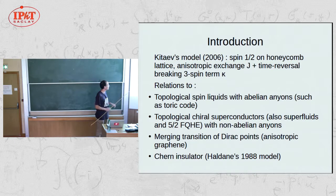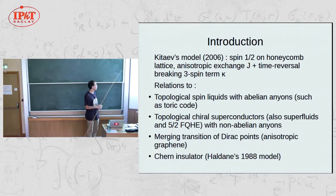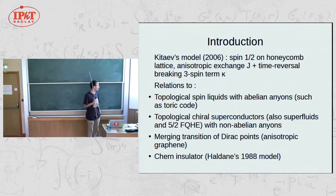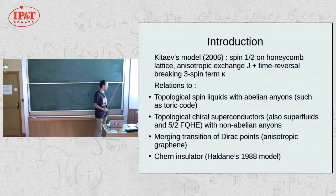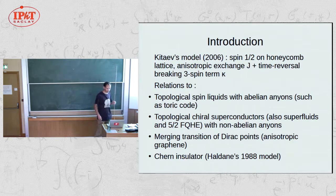We study a lattice with an isotropic exchange interaction, and especially a 3-spin term that breaks time reversal symmetry. This problem has connections to several other subjects: the toric code, topological chiral superconductors or superfluids in which vortices carry non-abelian anyons, the merging transition of Dirac points studied in anisotropic graphene or graphene under stress, and topological insulators, specifically the Haldane model of a Chern insulator.